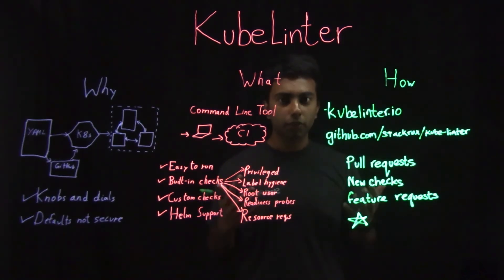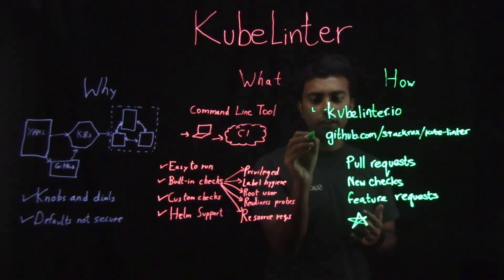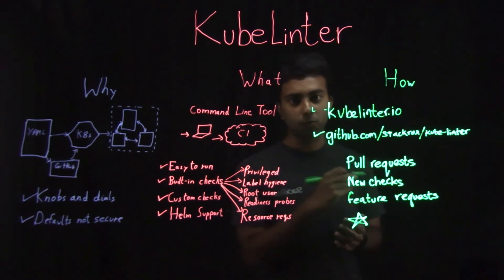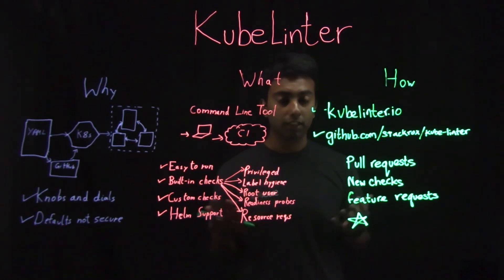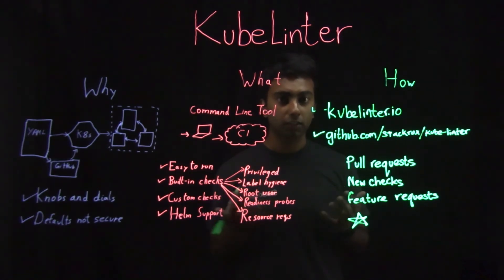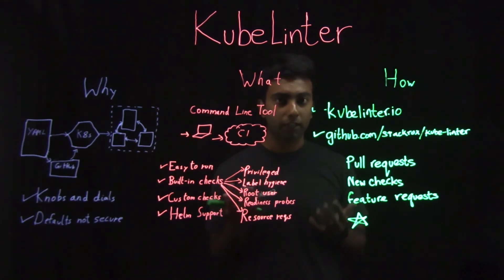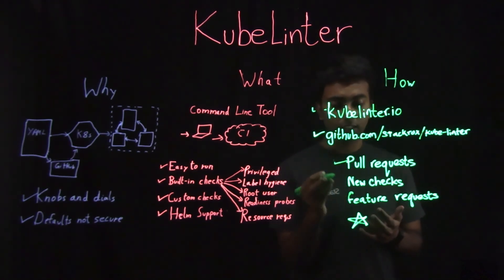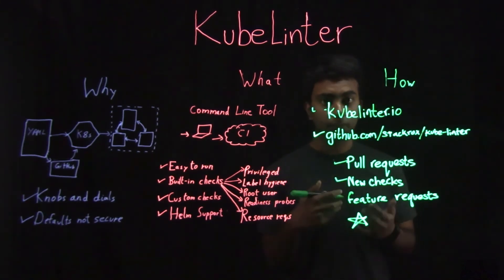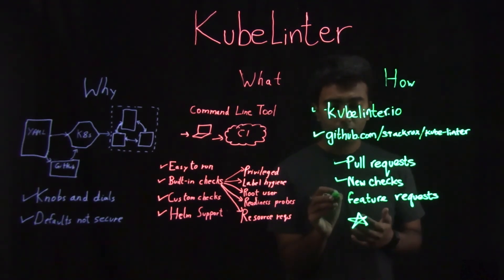So how can you get started with KubeLinter? You can go to kubelinter.io or our GitHub page at github.com/stackrox/kube-linter to download the tool, check out our documentation, example usage, as well as our code itself. We look forward to hearing about your experience as a user of the tool. We are really open to your input and we welcome your suggestions, both in the form of pull requests, as well as any requests that you have for new checks or any broader requests for new features.